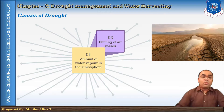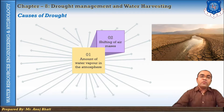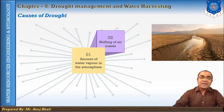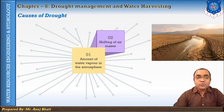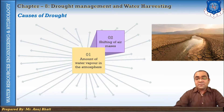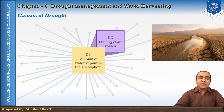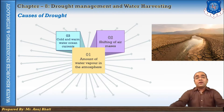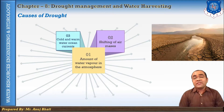The next cause is the shifting of air masses. When winds shift air masses and warm dry continental air moves over an area, as opposed to cooler moist air masses, the area suffers a drought. The third cause involves cold and warm ocean water currents.